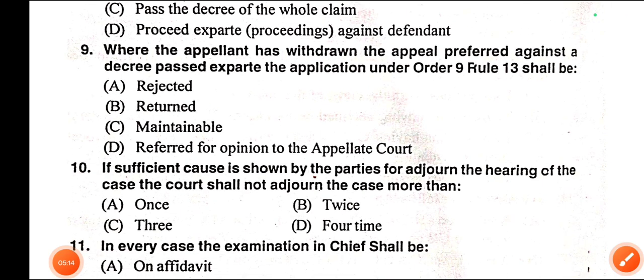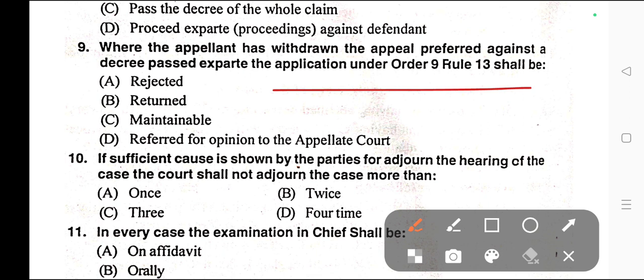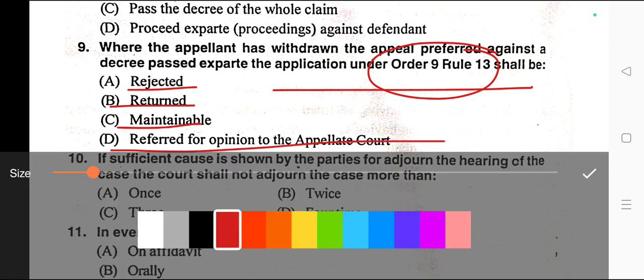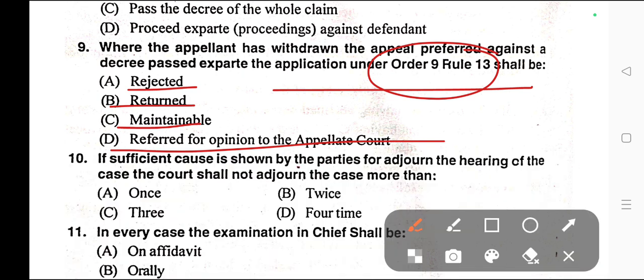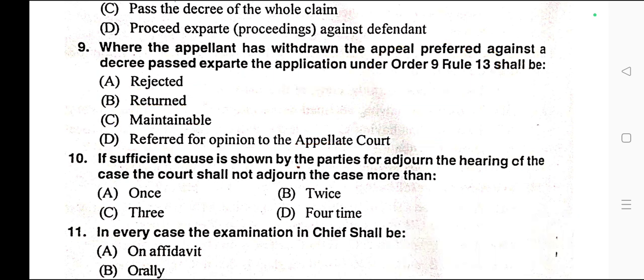Question number nine: Where the appellant has withdrawn the appeal preferred against a decree passed ex parte, the application under Order 9 Rule 13 shall be — A) Rejected, B) Returned, C) Maintainable, D) Referred for the opinion of the appellate court. Correct answer is option C — maintainable.